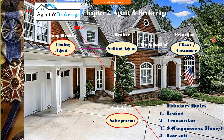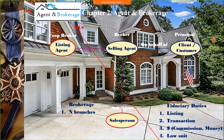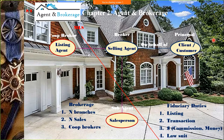So they handle the listing transaction and commission money — all flows through this broker. And a brokerage can have as many branches, co-op brokers, and affiliates as possible.